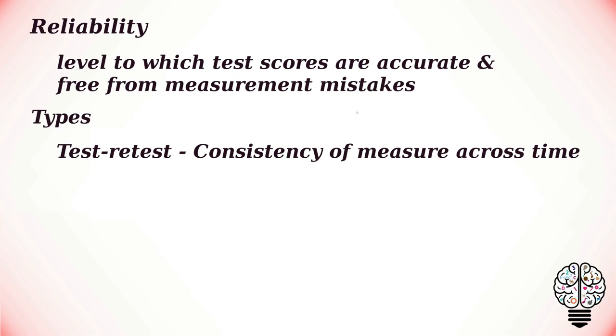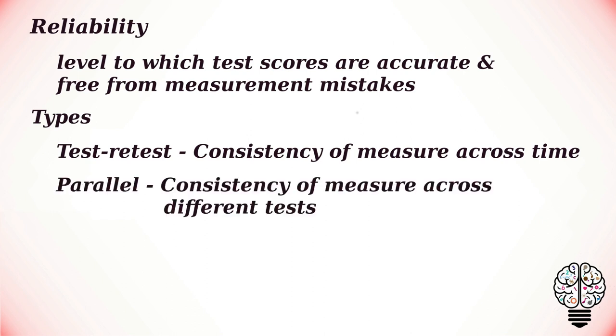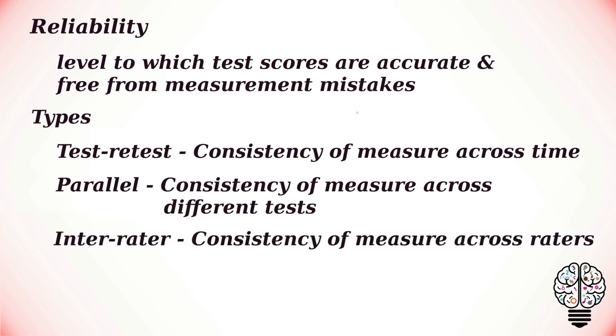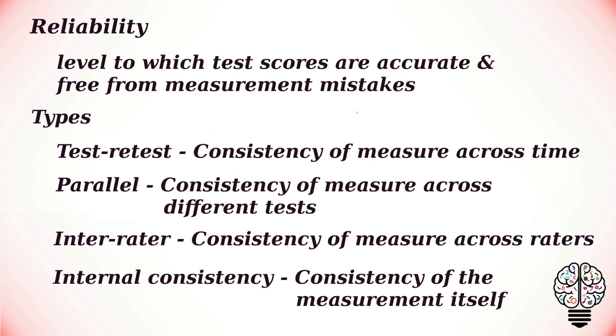Alternate or parallel form reliability indicates how consistent test scores are likely to be if a person takes two or more forms of a test. Inter-rater or inter-observer reliability indicates how consistent test scores are likely to be if the test is scored by two or more raters or observers. Internal consistency reliability measures the consistency of results across items within a test.